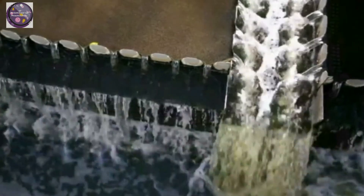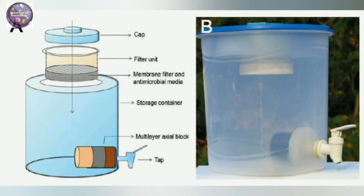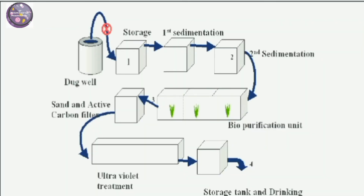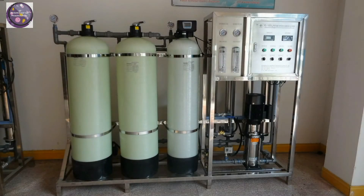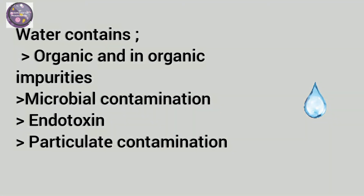Water is an important raw material in GMP and in validating the manufacturing process. Why is purification of water important? Although tap water is reasonably pure, it is always variable due to seasonal variations and regional variations in quality. One must remove impurities and control microbes to avoid contamination of products. Pre-treatment depends on the quality of feed water, and water quality should be specific for product quality. Purification may be necessary because water can contain organic and inorganic impurities, microbial contamination, endotoxins, and particulate contamination.